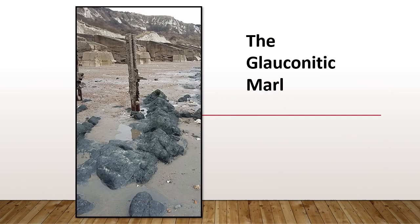Now let's look at some fossils from the chalk. This is the glauconitic marl, which represents the start of chalk deposition. Unlike the rest of the chalk which is very white, this is very dark, almost black, and we think it could be partly made of volcanic ash, though more research is needed. We know there were volcanoes not too far away — there was a failed rift system in what is now the North Sea — and it was around the same time the Atlantic was opening up, with rifting occurring in more than one location.